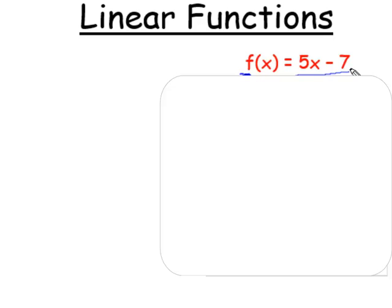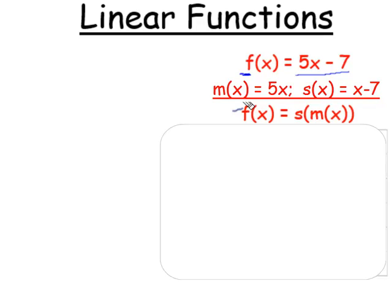This linear function can also be understood as a composition. First, we use the function m, which when computed on x gives us 5 times x. And we follow that by the function s of x, which takes the number x and subtracts 7. Our function f is the composition of this function. First, do m to x, that is, find 5x, and then take the number m of x and subtract 7.